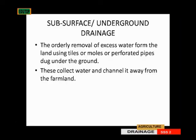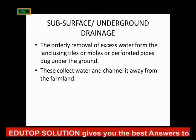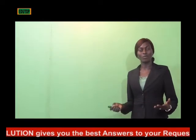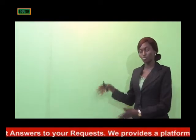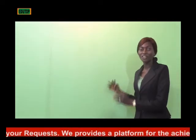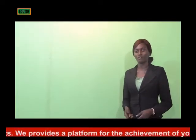The second type of drainage system is what is called the sub-surface or underground drainage system. This is the orderly removal of excess water from the land using tiles, moles, or perforated pipes dug under the ground. This is not an open ditch — this is the use of perforated pipes that are under the ground. The pipes collect water and channel it away from the farmland, just like water corporation pipes distribute water to various communities.